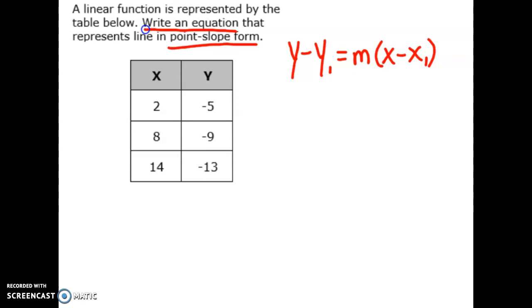All right, so we've got our formula. It's called point-slope, so we need a point and we need a slope. You have three points to choose from. So for instance, I might choose the first point, 2, negative 5. And I would label it x1, y1. And that's what I would plug in my formula.